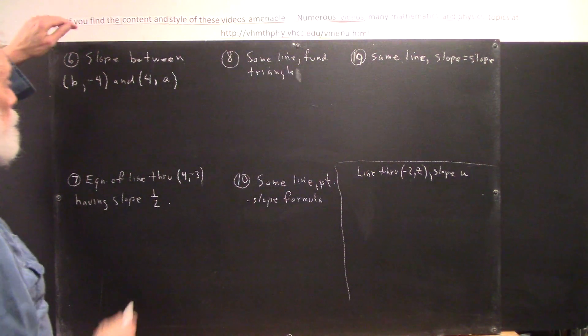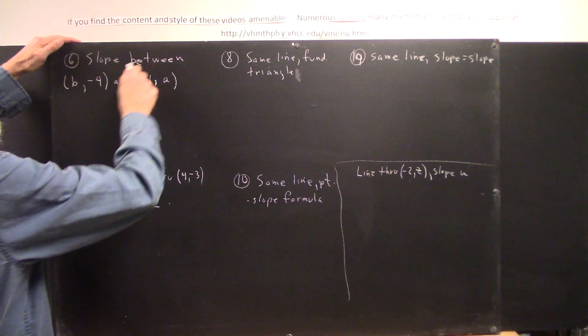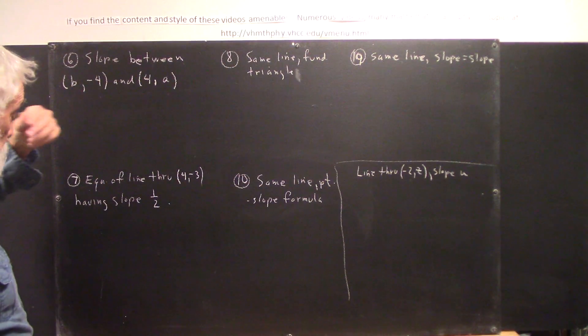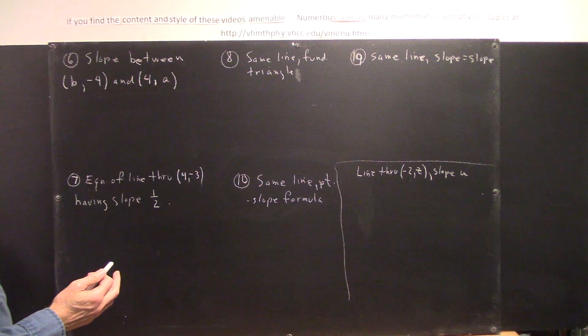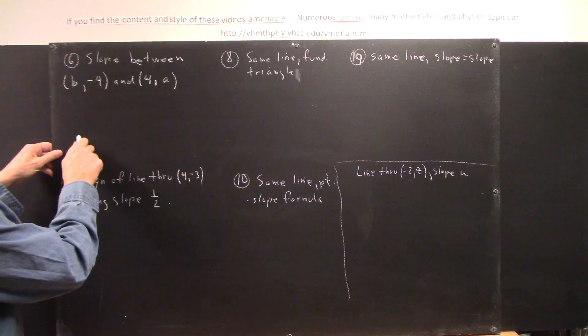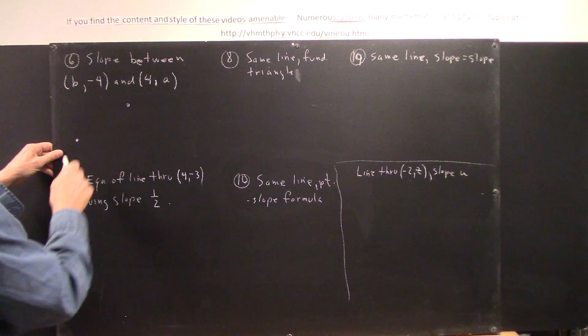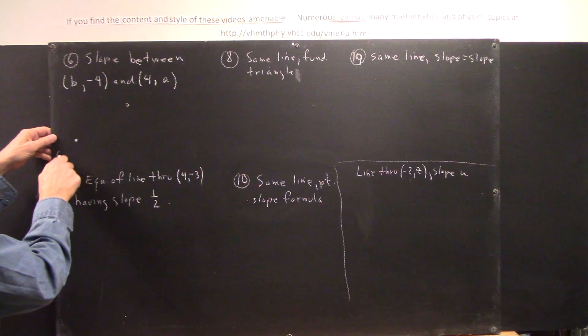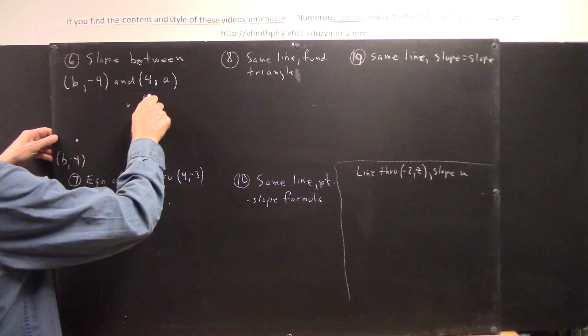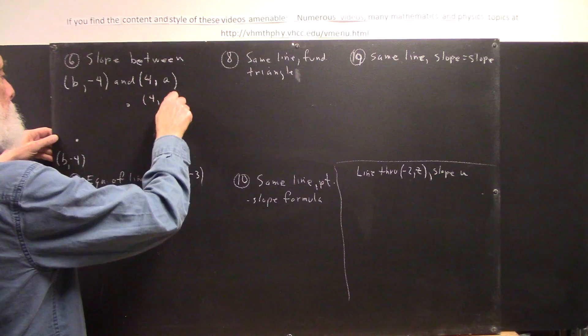For number 6, let's find the slope between B-4 and 4A, these two points. Now, we don't know the values of A and B, so we can draw the points any way we wish, and we'd label one of them B-4 and the other 4A.